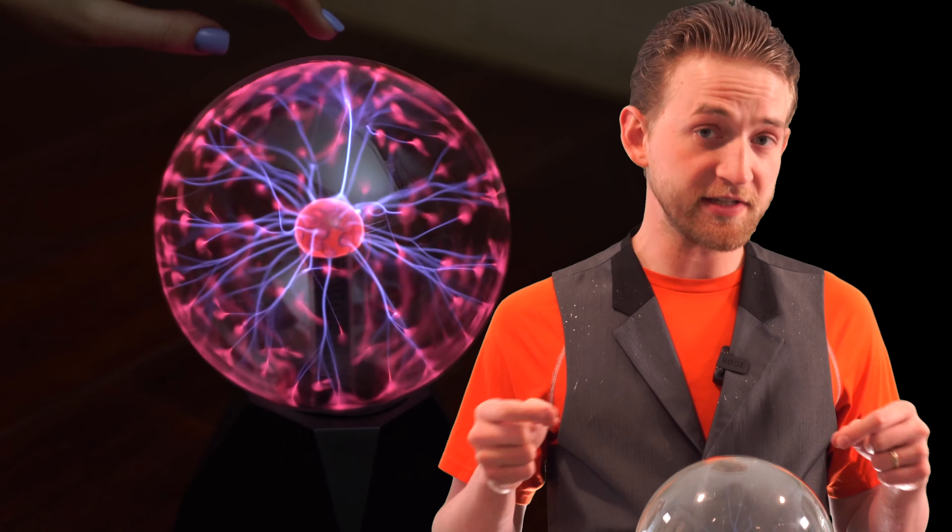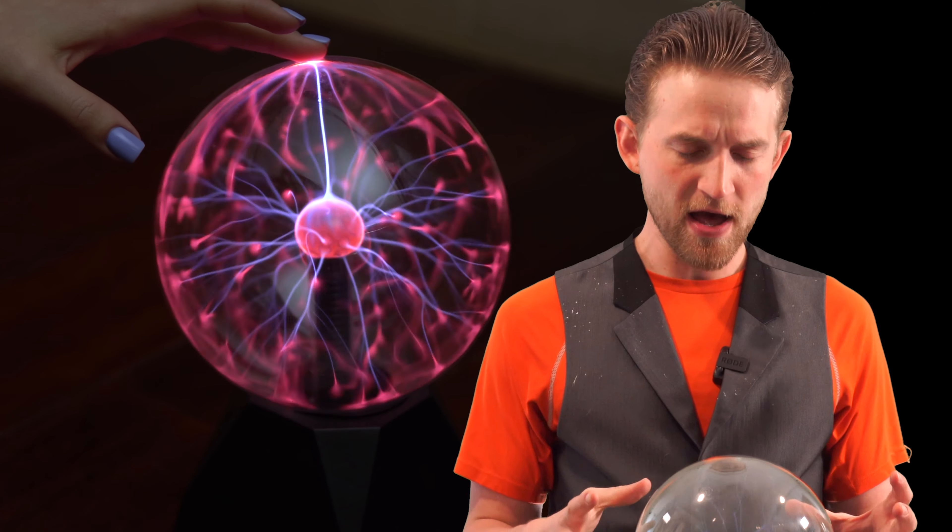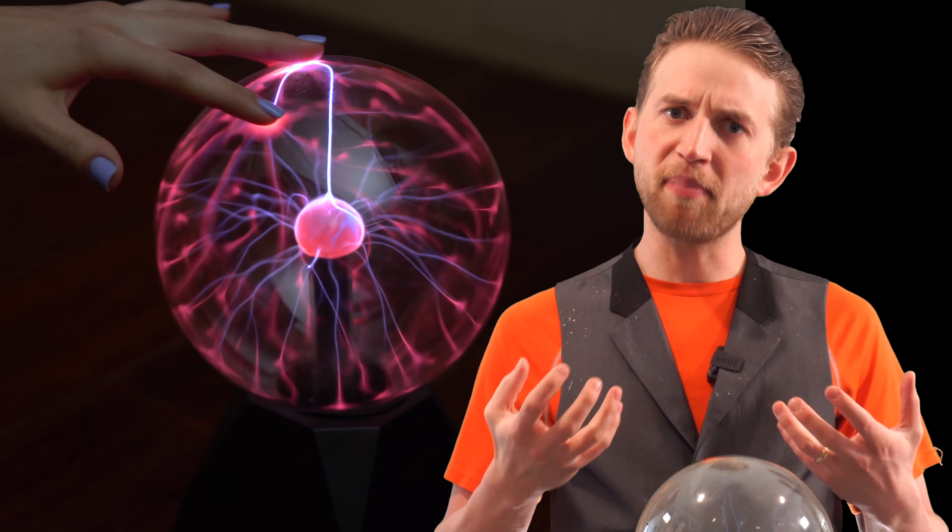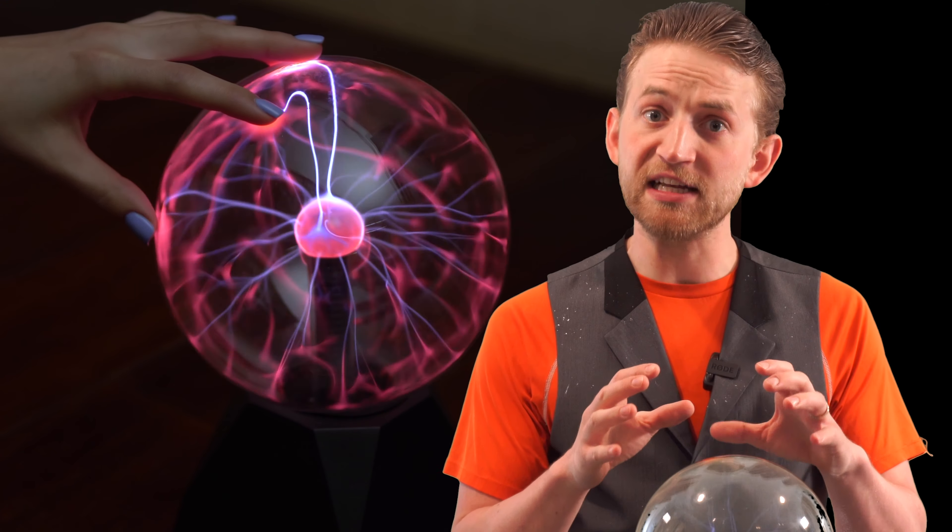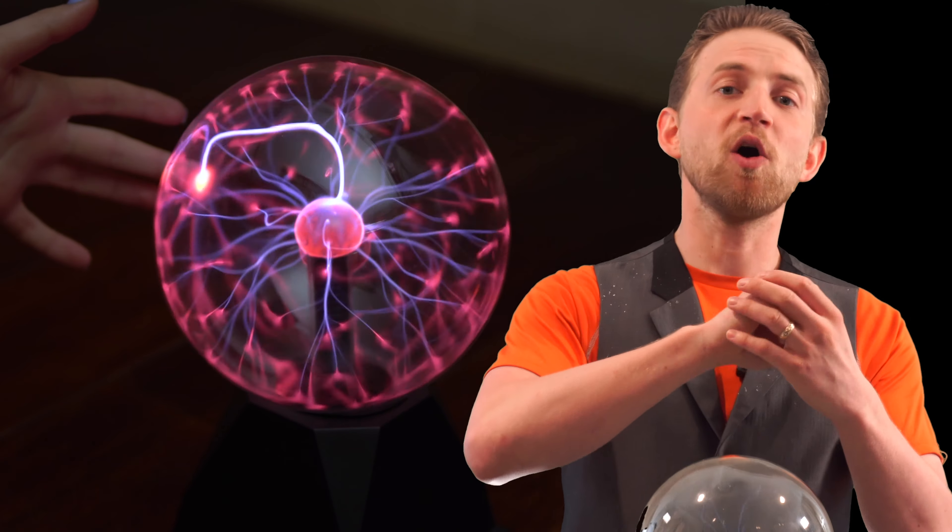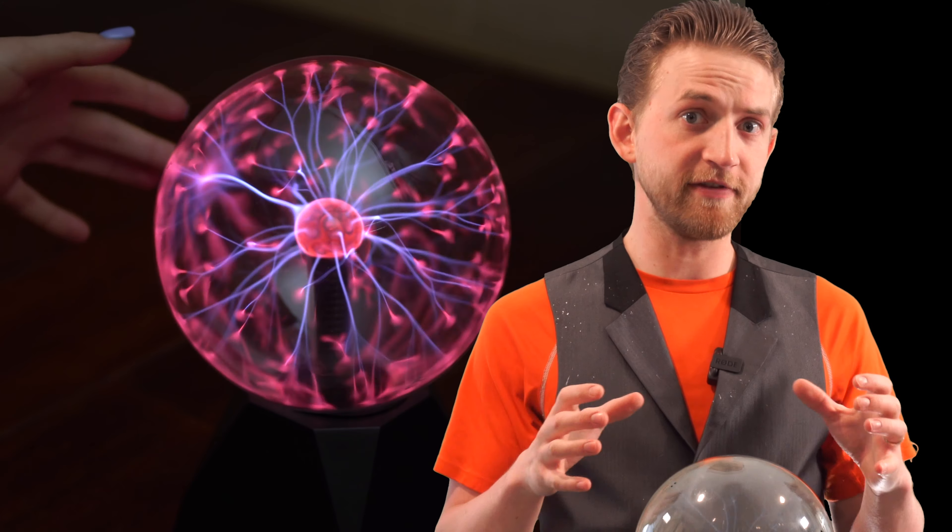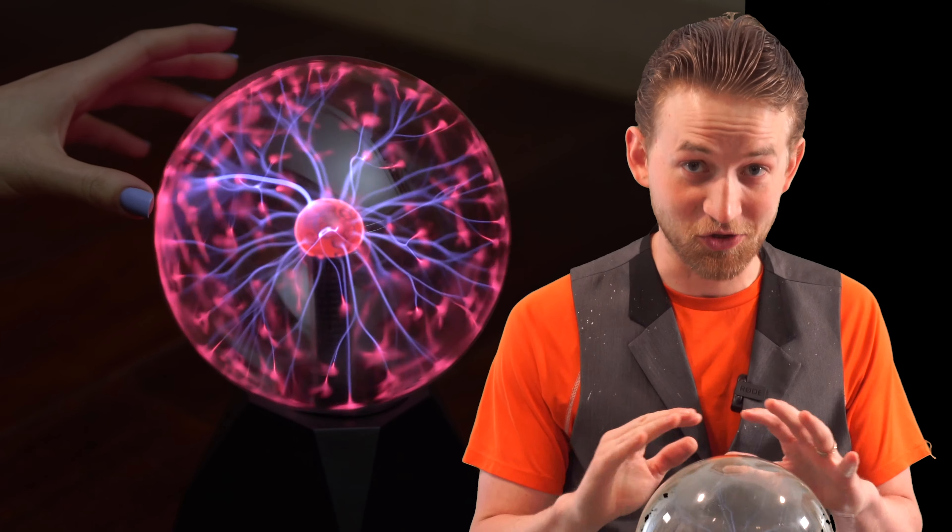Obviously that is a simplified version of what plasma is, but you get the idea. So now we've created, due to this Tesla coil in the inside of this globe, enough energy that we're pumping into the atoms of these noble gases that we're creating plasma. We're stripping those electrons away from the nuclei of the gases, which is super cool.